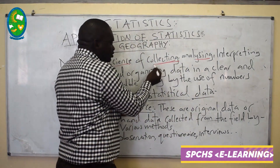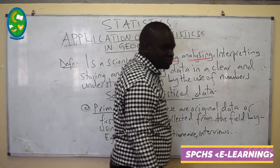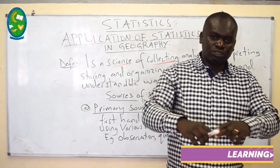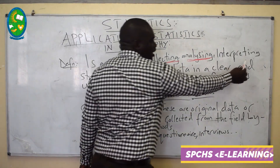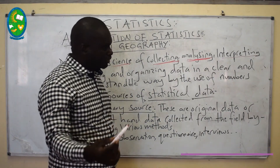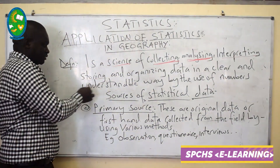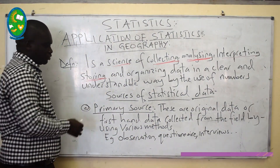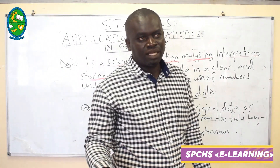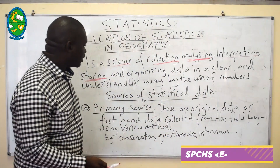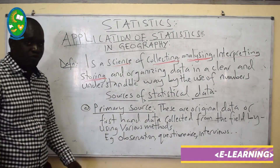When we say 'collecting,' it means you collect data from the field. 'Analyzing' means the process of summarizing the data which is already collected. You also need to know how to interpret such data — you can interpret data through different graphs, charts, and so on. 'Storing' means you have to store data, and you can use graphs or charts. And you organize data in a clear and understandable way. That is the simple definition of statistics.